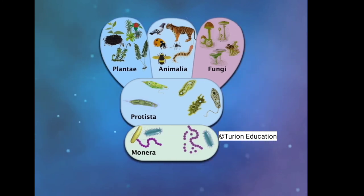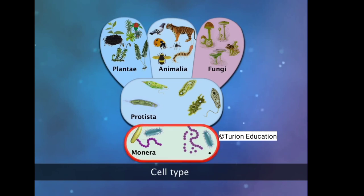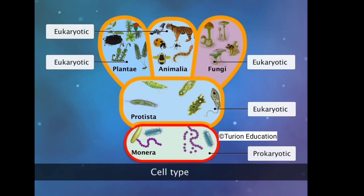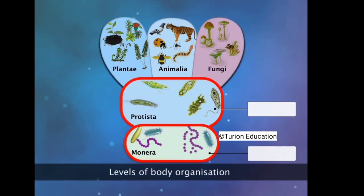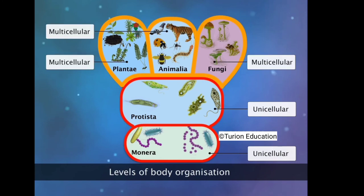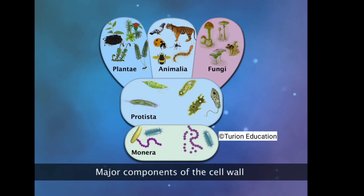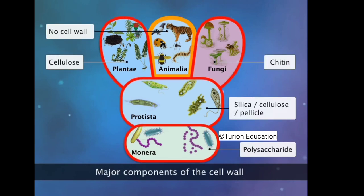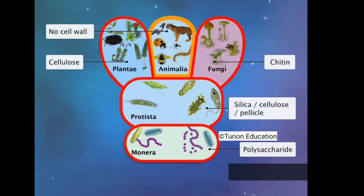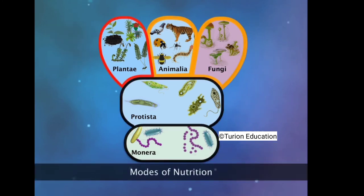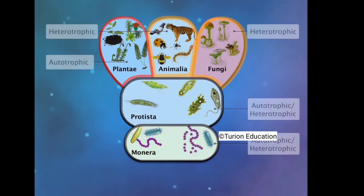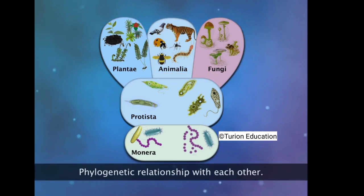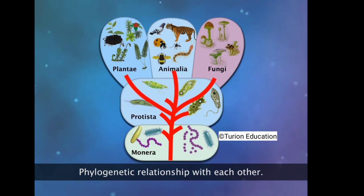The main criteria Whittaker used for classification were: cell type (whether prokaryotic or eukaryotic), levels of body organization (unicellular or multicellular), major components of the cell wall, modes of nutrition (autotrophic or heterotrophic), and phylogenetic relationship — the degree to which species share common ancestors.